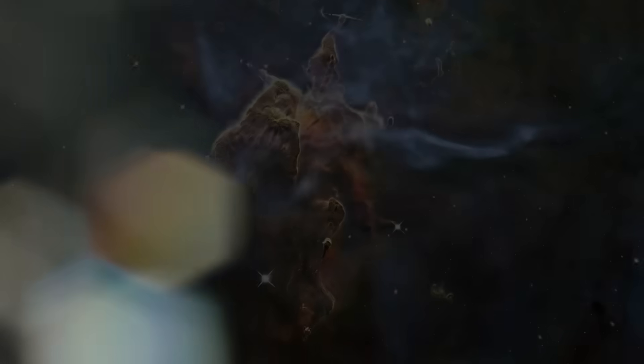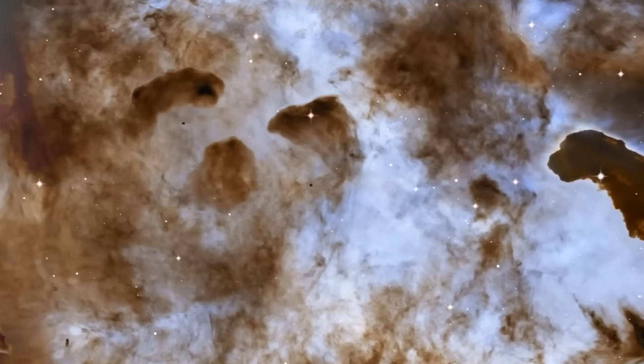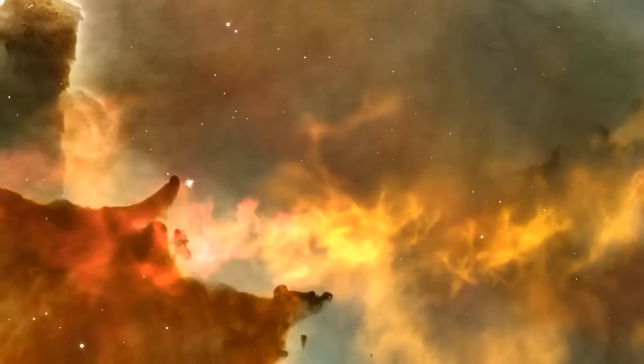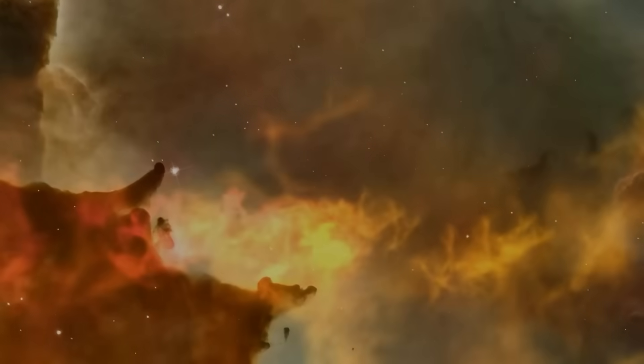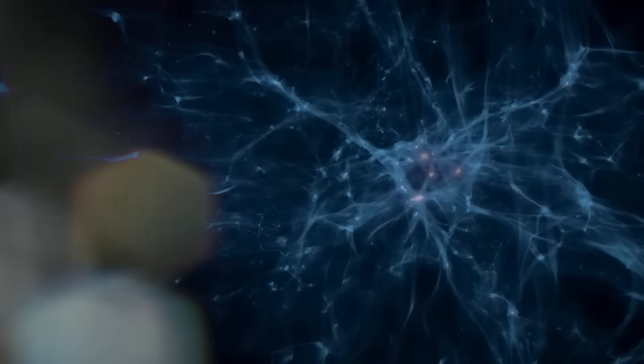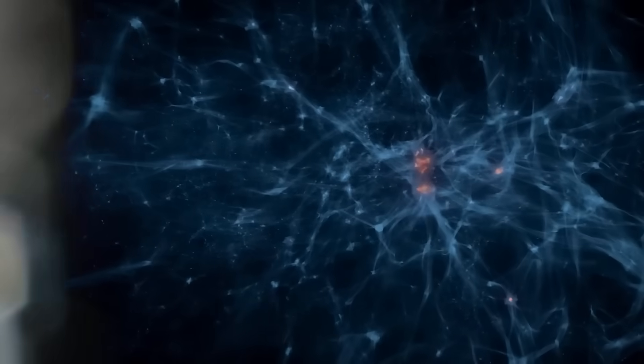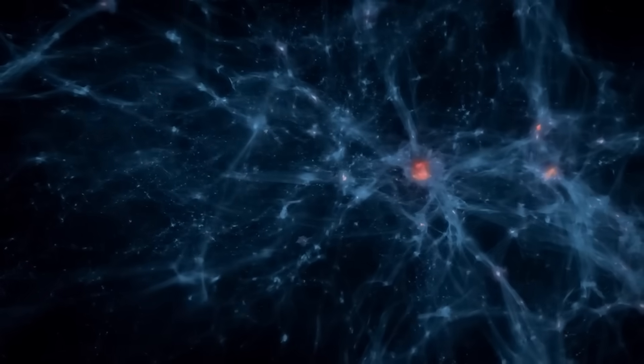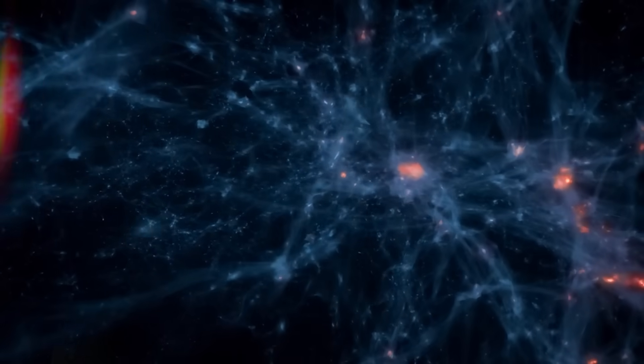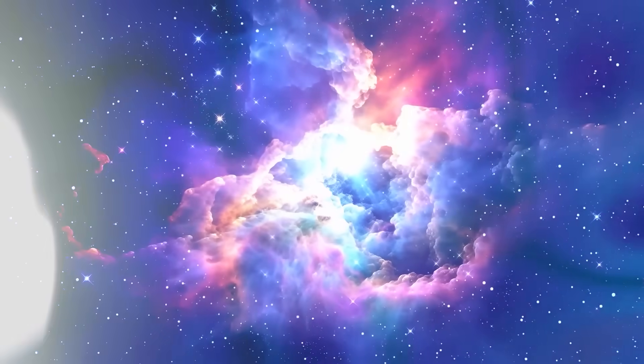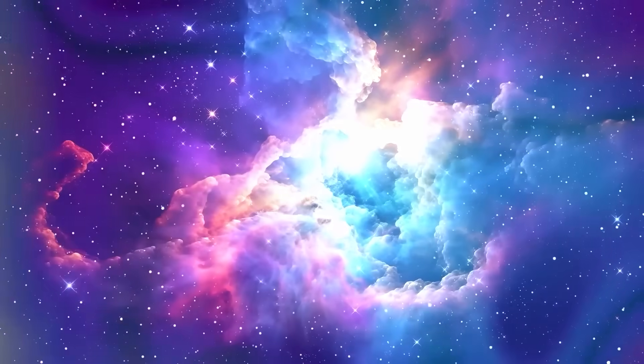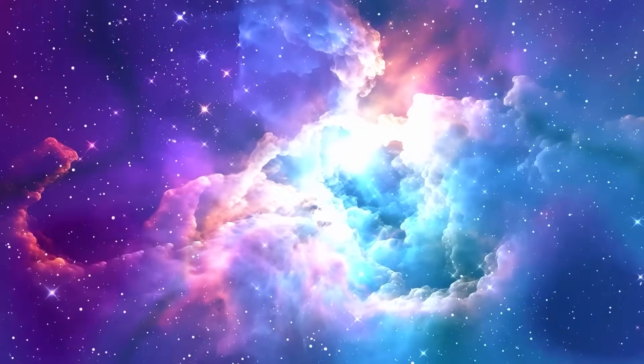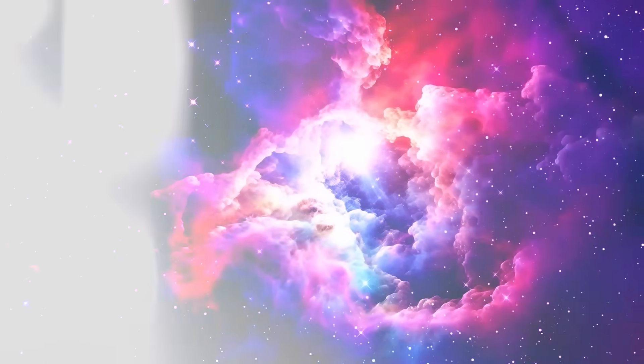But before that silence settled in, web sensors captured one last image. An infrared composite unlike anything seen before. It wasn't a shadow. It wasn't a distortion. It was a shape. Symmetrical. Angular. Perfectly proportioned. Like a sigil floating in space. It lasted just three frames. Too brief for full decoding. But artificial intelligence analysis confirmed the structure was not random. It was geometric, composed of nested triangles, circles, and lines forming a recursive pattern. And then it vanished.